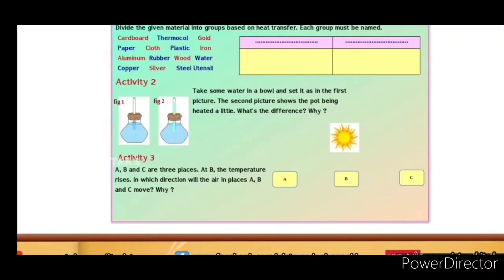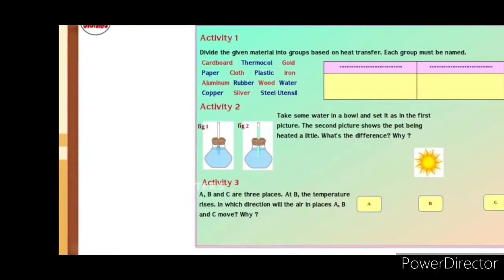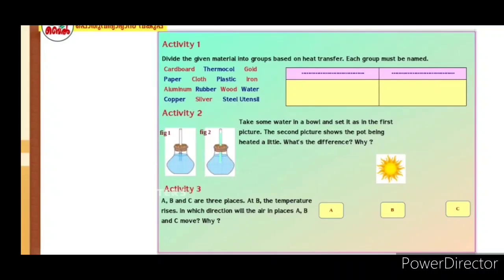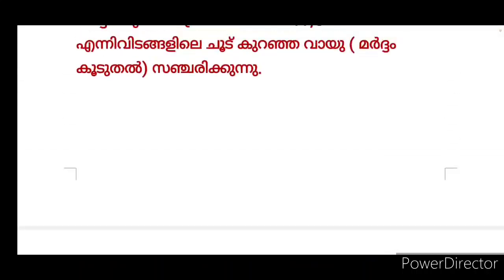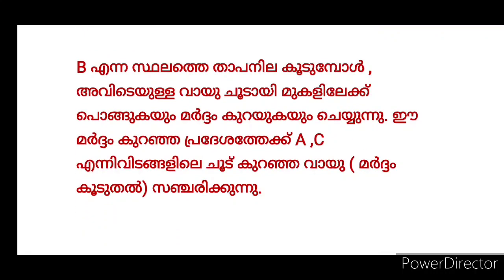A, B, and C are three places. At B, the temperature rises. At which direction will the air in places A, B, and C move? Why? The air from A and C will move towards B. As the temperature on B increases, the air becomes heated and moves upwards and a low pressure is created. As a result, the air from A and C move towards the low pressure area, that is B.